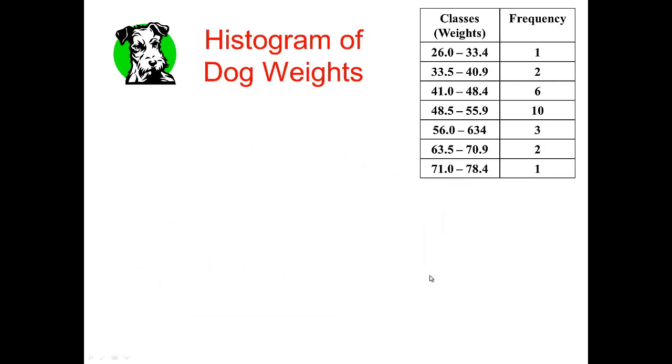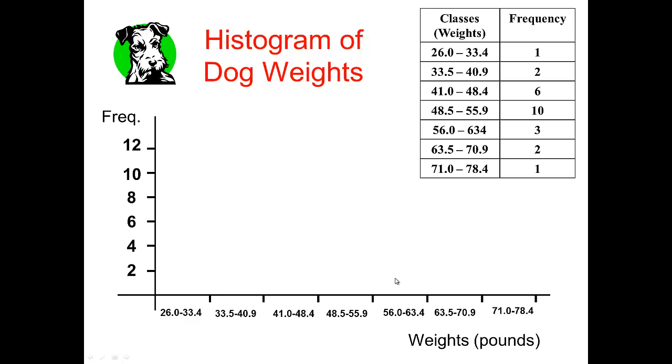We can now also construct a histogram of the dog's weight in the same manner. If you would like to try this on your own, this would be a great place to stop and pause the video before I proceed to show you what to do and what the histogram would look like. Notice the horizontal axis with the weight in pounds of the classes along the bottom of the page. And again, the frequency as the vertical axis.